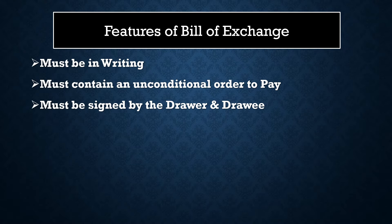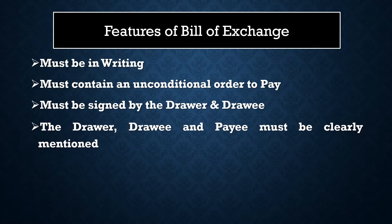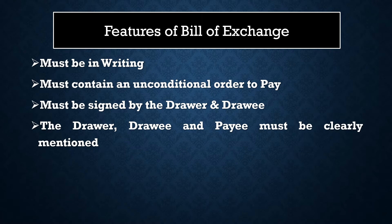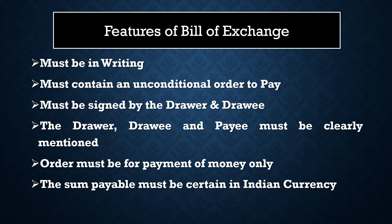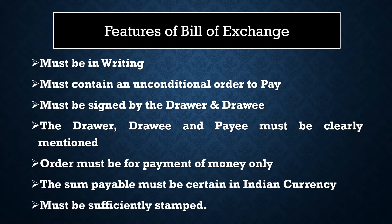Drawee means the person who is accepting to pay. The name of the drawer, drawee and payee must be clearly mentioned. The amount payable — it must be an order for making payment of money only, and the amount payable must be clearly mentioned in the document. The date of payment and the stamp must also be affixed in the document.